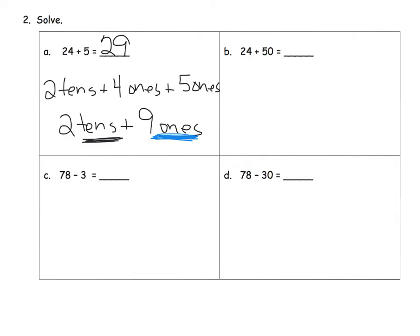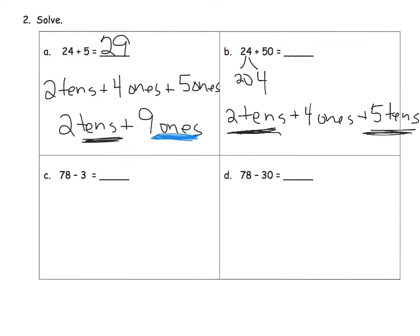Letter B: twenty-four plus fifty. Twenty-four is two tens and four ones, so we have two tens plus four ones, plus five tens. Two tens plus five tens gives us seven tens, and we have four ones left over, so our answer is seventy-four. You're starting to see why we call this adding like units.